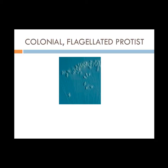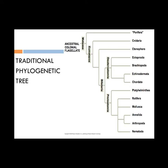Animals probably evolved from a colonial flagellated protist from the Precambrian era, about 700 million years ago. Animals are most closely related to fungi. There are over 35 phyla of animals. Molecular systematics has reshaped our view of animal diversity. This is a traditional phylogenetic tree based on body plans and embryonic development. Each major branch is called a grade, and it has physical features shared by animals in that branch.